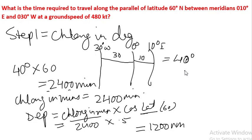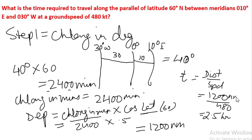Now time taken will be equal to distance upon speed, which is 1200 upon 480, which equals 2.5 hours. This 1200 is nautical miles and 480 is knots, equal to 2 hours 30 minutes time taken to travel this distance.